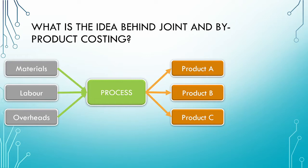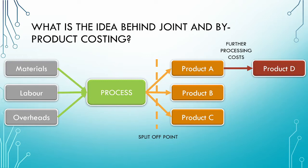It is important to note that for joint processes, we cannot distinguish between the different products until a specific point known as the split-off point. Before the split-off point, we cannot trace the costs to the individual products. After the split-off point, where the products are separately identifiable, the products may be subject to further processing.